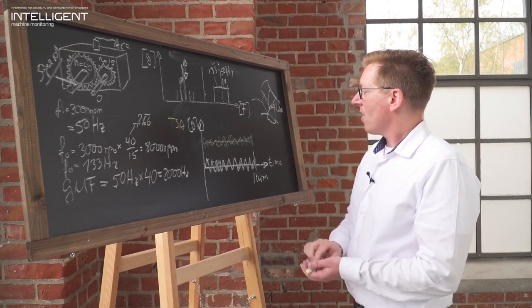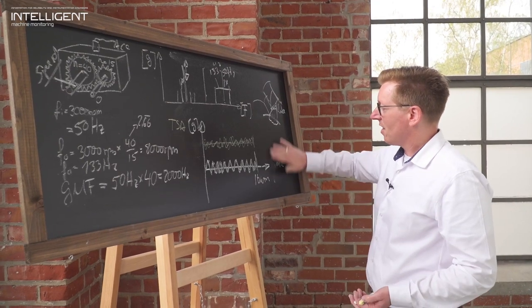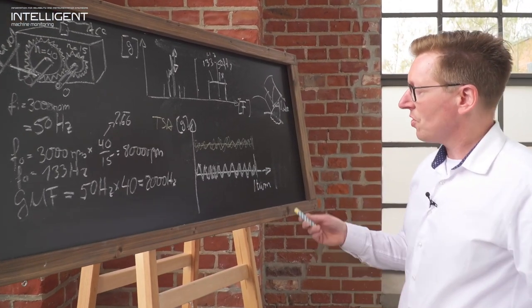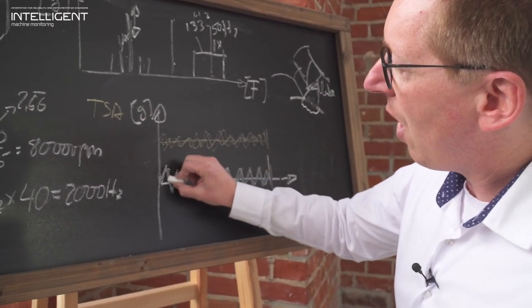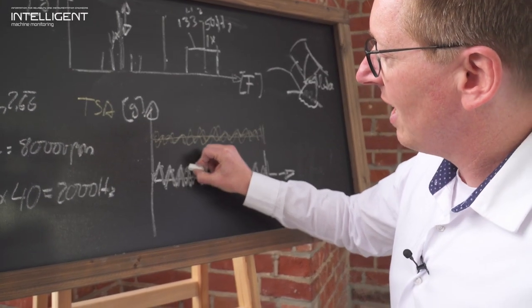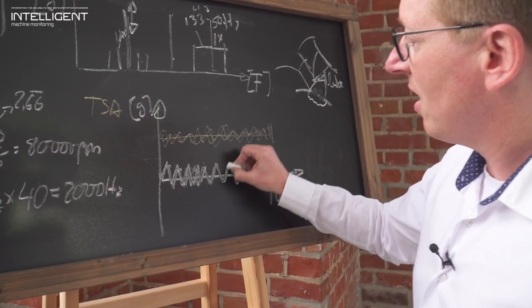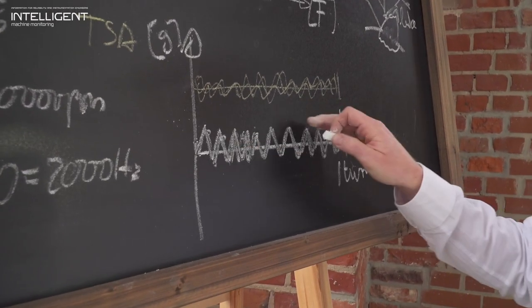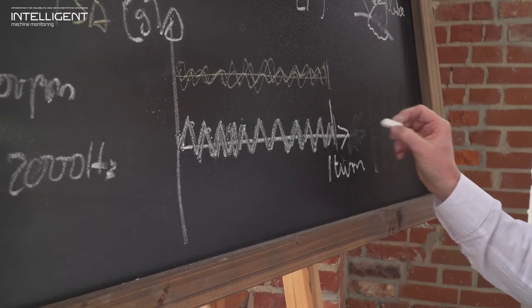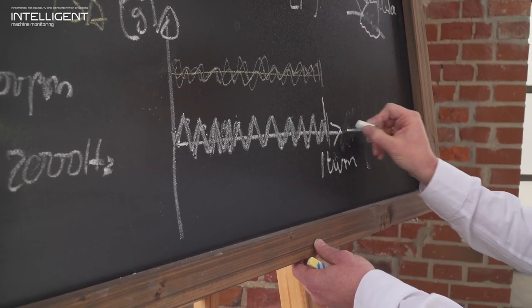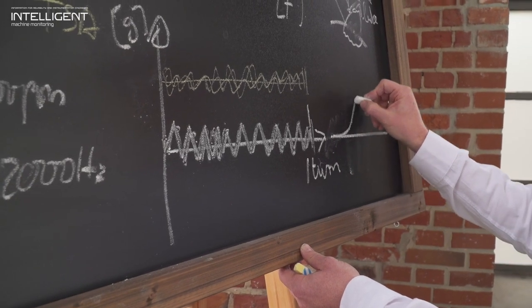This TSA is then further analyzed in a so-called kurtosis analysis. The kurtosis is a reflection of how even, how equal each contact is compared to the one next to it. It's a statistical evaluation where you put all the sample points into a statistical evaluation of a Gauss curve,